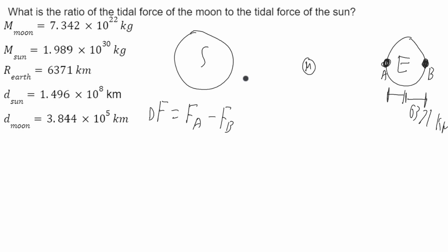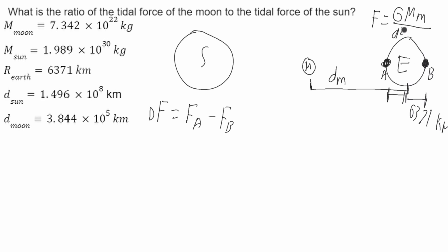These forces are gravitational forces. Force is equal to G times the mass of a large body times the mass of the water over the distance between them squared. From the moon to the center of the Earth, the distance is 3.844 times 10 to the 5 kilometers — I'll call this D_m. The distance to point A will be D_m minus the radius of the Earth, and to point B it'll be D_m plus the radius of the Earth. The sun's distance is 1.49 times 10 to the 8 — I'll call this D_sun — and the same property about accounting for Earth's radius applies.